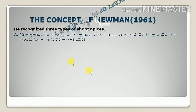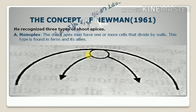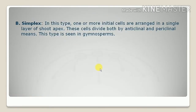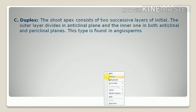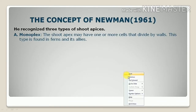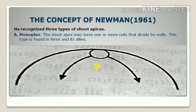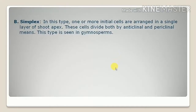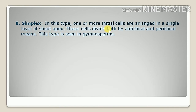The last concept is that of Newman. Newman recognized three types of shoot apexes: first, monoplex; second, simplex; and third, duplex. In the monoplex type, the shoot apex may have one or more cells that divide by walls parallel to or inclined to the stem walls. This is found in ferns and algae. In the simplex type, there are one or more initial cells arranged in a single layer of the shoot apex.